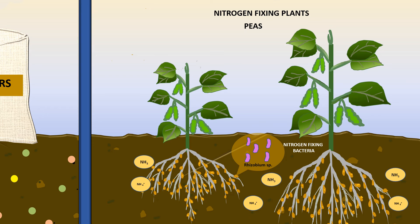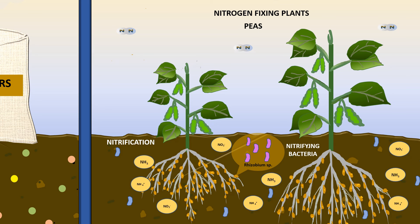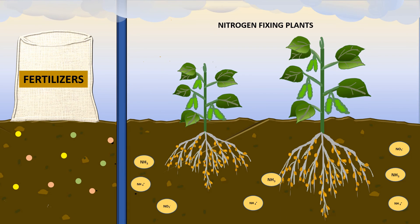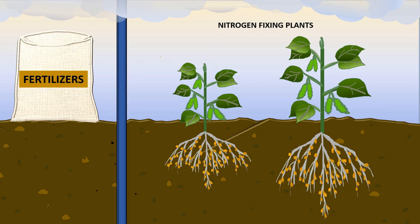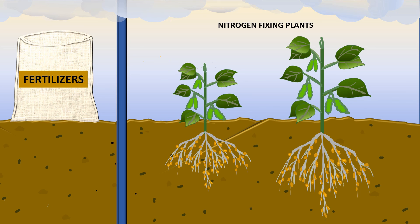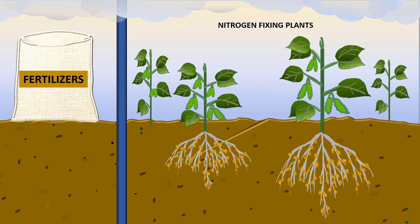Ammonia and ammonium can undergo nitrification by nitrifying bacteria which live freely in the soil, converting ammonia and ammonium into nitrates. In summary, fertilisers and nitrogen-fixing plants both help to add nutrients into the soil, therefore making the soil fertile. A fertile soil ensures plants grow healthy and multiply, hence increasing crop yield.